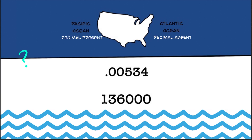The simple rule I like to go by is the Pacific-Atlantic rule. The Pacific Ocean is on the left of the United States and the Atlantic Ocean is on the right. Pacific, in our case, will signify that a decimal is present.